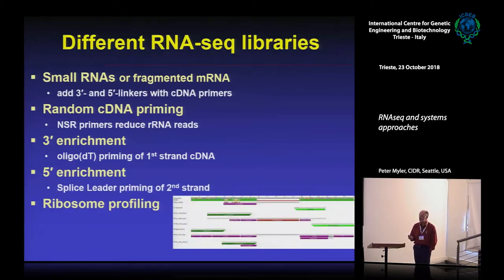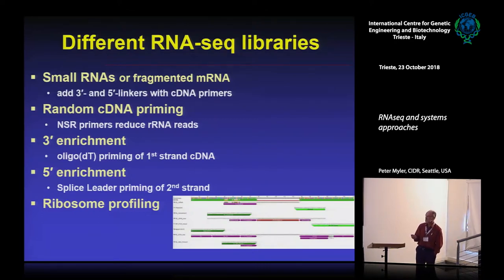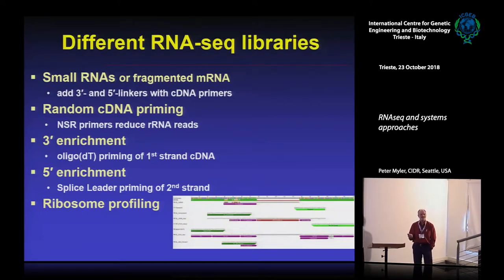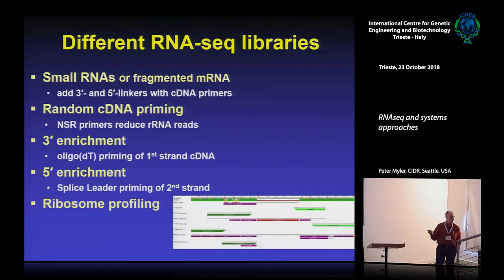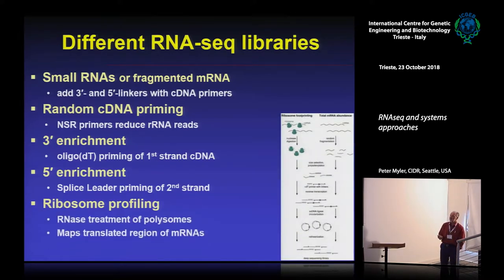In trypanosomatids, we have a big advantage that most other organisms don't have: we can enrich for the five prime end by using the splice leader sequence to amplify your second strand. This is actually very useful to pull out Leishmania-specific sequences and separate them from mouse or human if you're working with a mixed sample. Ribosome profiling is a different type of RNA-seq useful for looking at translation.